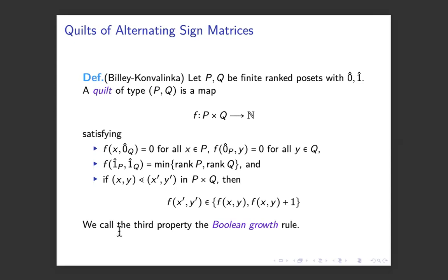And it satisfies pretty much the same three properties. So along the boundary at the bottom, you have all zeros, the top has to be at most the rank of p or the rank of q, whichever is smaller, and you have this boolean growth type property, that when you step up by a covering relation in p cross q, the corresponding value of f can either be the same or step up by one. So boolean meaning you step up by zero or one here.